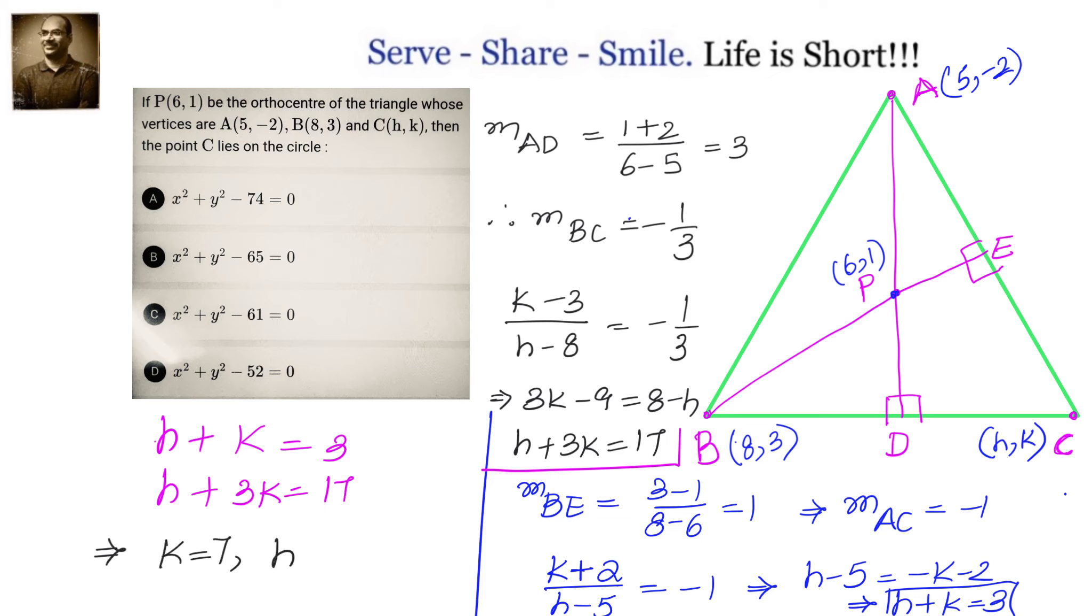Now, H, K is a point on this circle. That means we have to substitute H, K values in the given options and check which one is the right answer. H square plus K square, x square plus y square is H square plus K square, that equals 65. So option B is correct. The circle will be x square plus y square minus 65 equals 0.